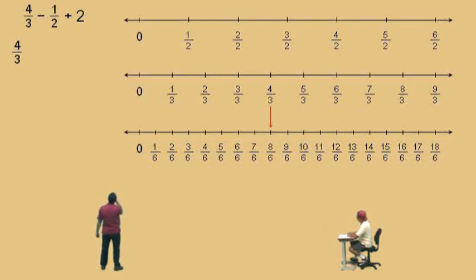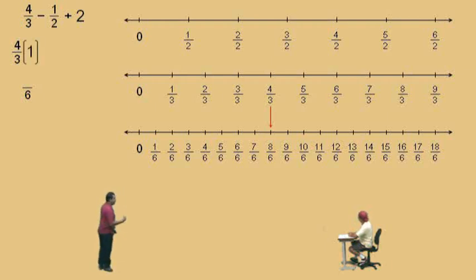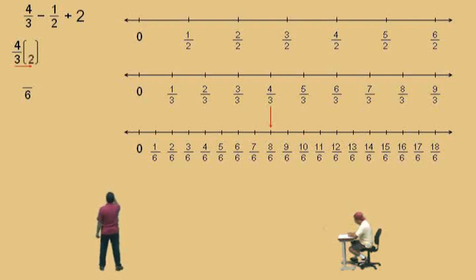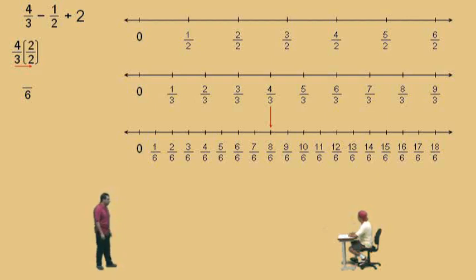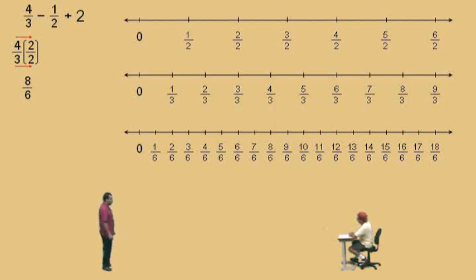Anyway, Charlie, here we go. We have 4 thirds. 4 thirds can be changed to what? 8 sixths. That's right. How do we write 4 thirds? We're going to multiply 4 thirds by 1. We look at that denominator, 3, and what do I multiply 3 by to get 6? 2. And if I multiply the bottom number by 2, I must multiply the top number by 2. How do you multiply fractions, Charlie? Straight across the top and straight across the bottom. What's 4 times 2? 8. And 3 times 2 is 6. So, there you go.